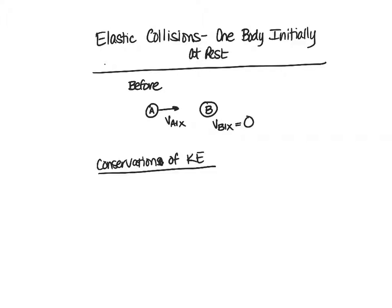So, considering that, our initial kinetic energy is one-half ma va1x squared. And then after the collision, of course, we assume that both objects will be moving. So we have the kinetic energy of Object A and Object B. And that's one of the conditions for an elastic collision. The other one is conservation of momentum.